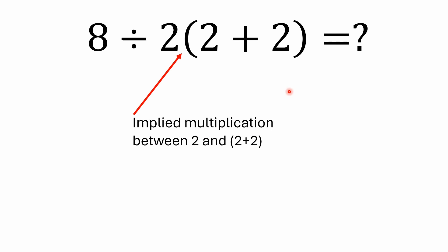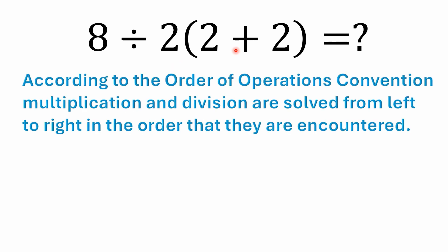All right, so really, all it is, whenever you see a number outside of parentheses like this, it's implied that this represents multiplication. So this is implying that you're multiplying 2 by the quantity of 2 plus 2. So if you were to look at this separately by itself, let's ignore this 8 divided out here, it would be 2 times 4, or 8. That's what that would represent. It's implying multiplication between the 2 and the 2 plus 2 in parentheses.